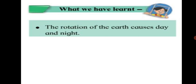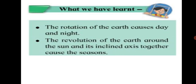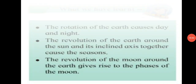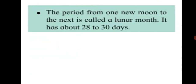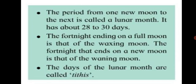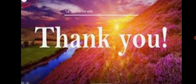Let's revise: the rotation of the Earth causes day and night. The revolution of the Earth around the sun and its inclined axis together cause the seasons. The revolution of the moon around the Earth gives rise to the phases of the moon. The period from one new moon to the next is called the lunar month, which has about 28 to 30 days. The days of the lunar month are called tithis. Do read this chapter from your textbook for better understanding. Stay safe and keep learning.